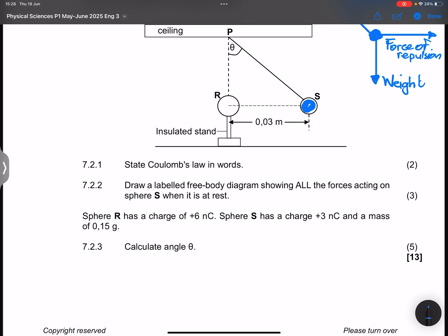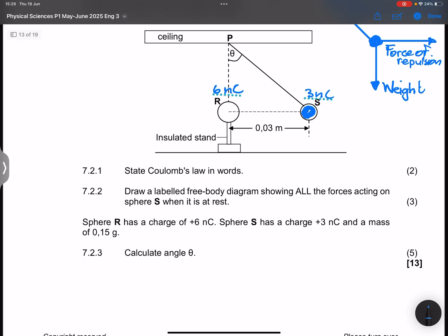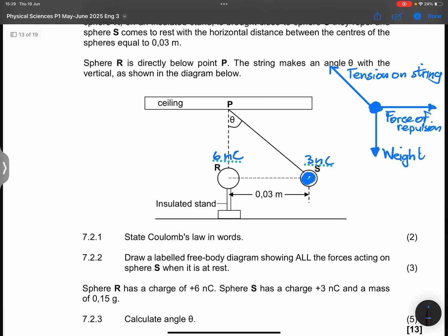They say to us sphere R has a charge of 6 nanocoulombs and sphere S has got a charge of 3 nanocoulombs and a mass of 0.15 grams. They want us to calculate the angle theta. Now ladies and gents, I really like this principle. Whenever we've got a system that is at equilibrium, there's what we call the triangular law of vectors in equilibrium. Which are the vectors in equilibrium? We've got the weight, which we can calculate by the way.